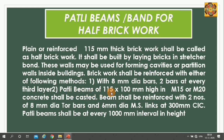Partly beams of 115 mm to 100 mm height with any grade of concrete — M15, M20, or higher — shall be cast. The beam shall be reinforced with two numbers of 8 mm dia tor bars and 6 mm dia MS links at 300 mm centre to centre. Partly beams shall be at every 1 meter interval, used to strengthen the half-brick wall.